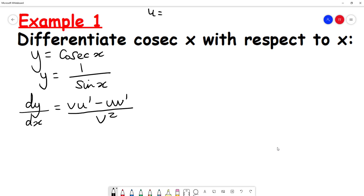Now, u is going to be 1, and v is going to be sine x. u dash is 0, because when you differentiate any constant in differentiation, you always get 0. The differentiation of sine is cosine of x.